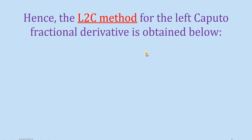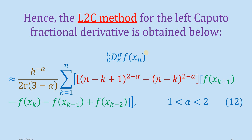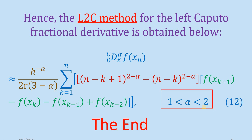Equation number 11 is basically our L2C method. The L2C method for the left Caputo fractional derivative has been obtained and is represented by equation number 12. This is a numerical technique to approximate the left Caputo fractional derivative where the fractional order alpha lies between 1 and 2.